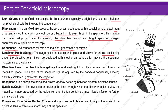Nosepiece: the nosepiece holds and allows for easy switching between different objective lenses. Eyepiece or ocular lens: this is the lens through which the observer looks to view the magnified image produced by the objective lens; it often contains a magnification factor to further enhance the image. Coarse and fine focus knobs: coarse and fine focus controls are used to adjust the focus of the objective lens to achieve a sharp image of the specimen.